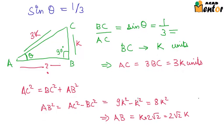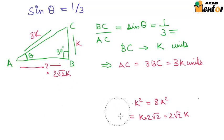Now finding out the ratios is pretty simple. So we have AB as 2 root 2k, BC as k and AC as 3k. We know that sin of theta is 1 by 3.